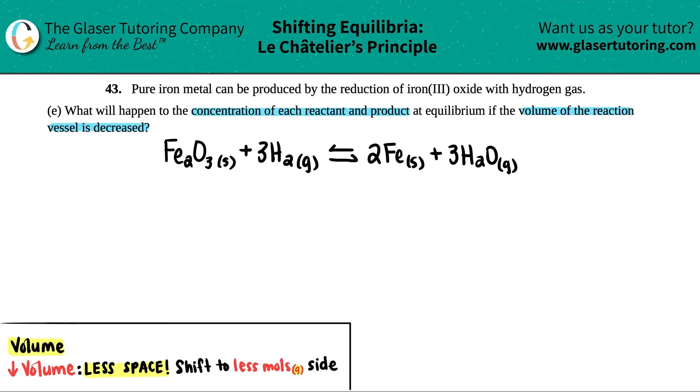So first thing I would do is I would just scan this balanced equation and I see here that I have a solid, I got a gas, I got a solid, and a gas. When we're doing our volume calculations, pay no mind to the solids. So you can basically cross this off completely.